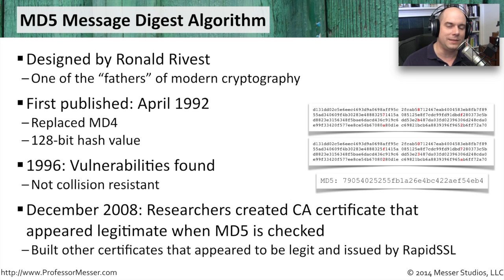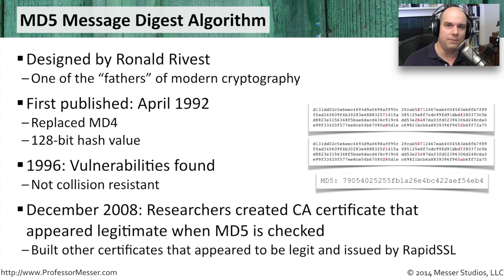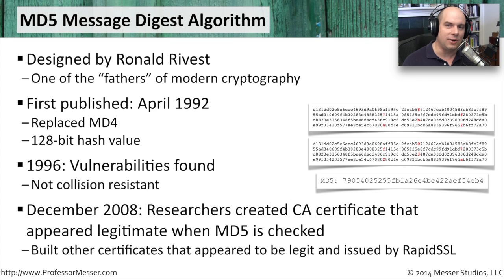To give you a feel for what these collisions look like, here are two separate pieces of information. Everything in red is text that is different between them, but everything else is exactly the same. Clearly those are different pieces of information, and unfortunately MD5 comes up with exactly the same hash — that's the collision right there, and that's what we're trying to avoid.